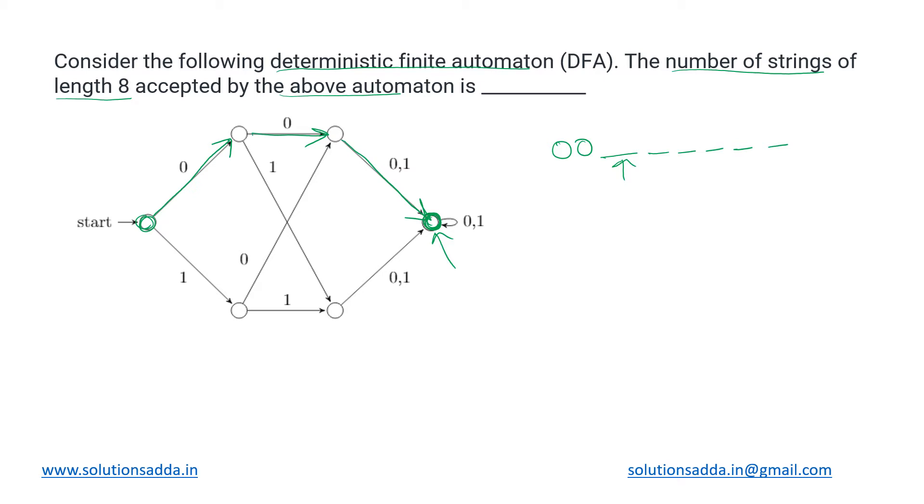So if we follow this path, how many strings can we generate? Two to the power six, because we are having six places where we can substitute either zero or one. There are two choices each, so two raised to six is 64 strings we can generate from this path.